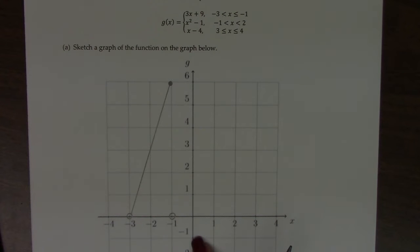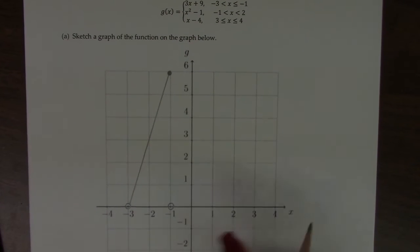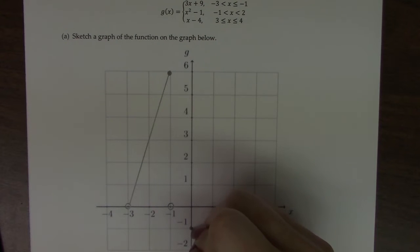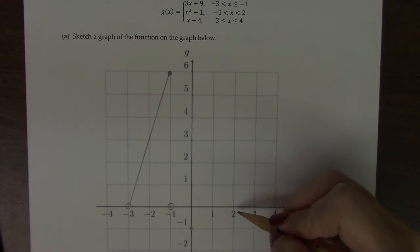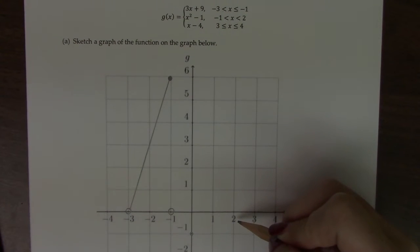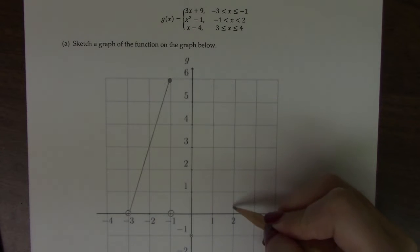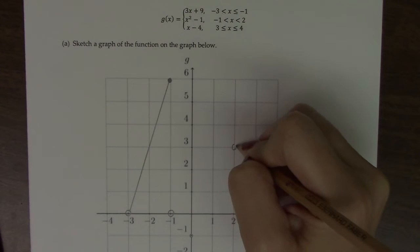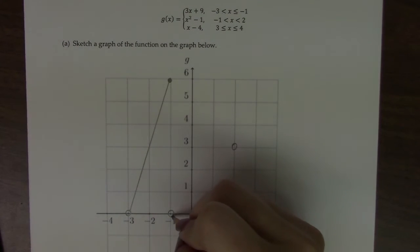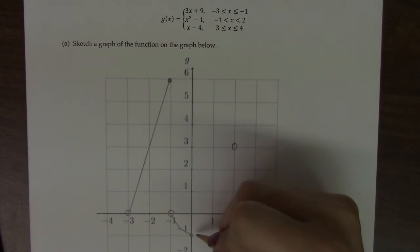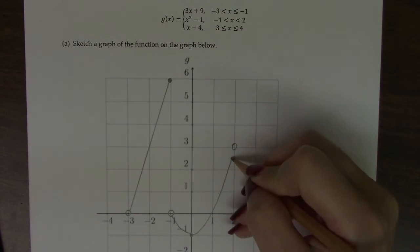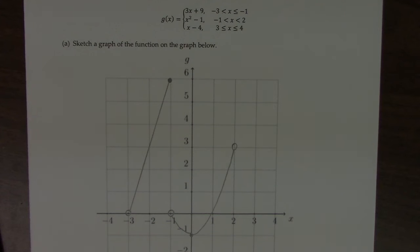I'm going to plug in 0 just because it's easy here. At 0, we get negative 1. So the function does exist there. And then at 2, if I plug in 2 here, 2 squared is 4, 4 minus 1 is 3. So this quadratic cuts off. And we can see it goes down and then connects up. So that's the middle piece.